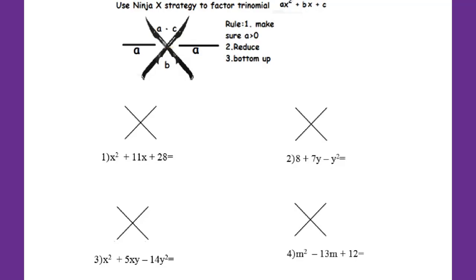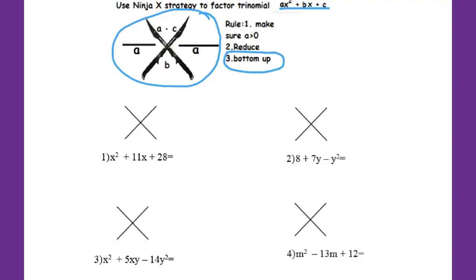This is what we call the ninja x — this format. You have to change it into ax squared plus bx plus c format. Then a times c goes to the top, b goes to the bottom, then you have over a. The way you write down your answer, you have to do bottom up.